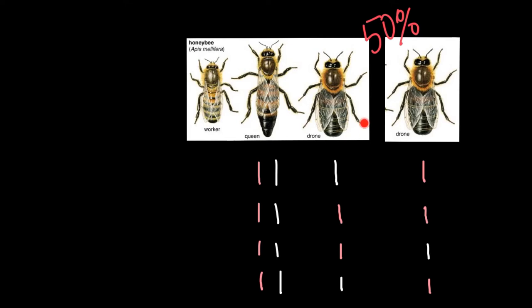As you see, drones — those that don't have a father and have only one parent — wouldn't be clones of their mother, because first of all drones are males, and drones have one set of chromosomes instead of two sets of chromosomes.